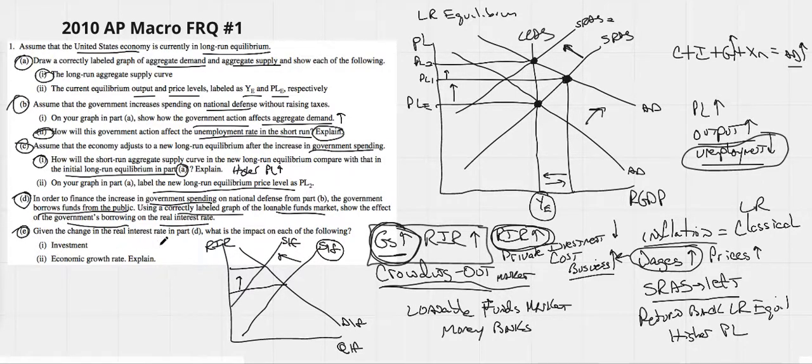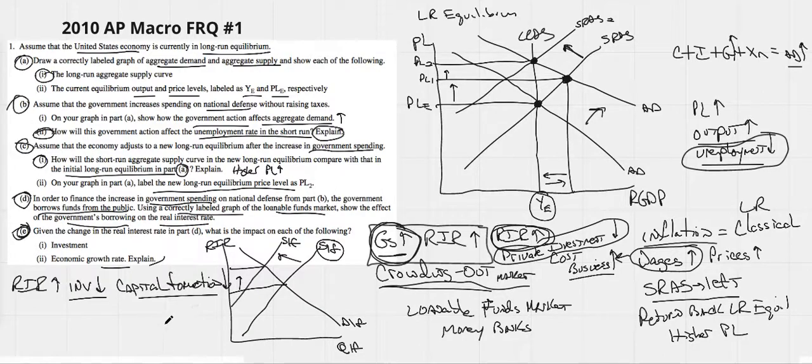E, given the change in real interest rate in Part D, what is the impact on the following? We've already kind of talked about that. As those real interest rates go up, and these are asked quite a bit. There's a ton of them, and we kind of answer them always in the same way. When real interest rates go up, we know that investment is going to go down. If there's less investment, could we assume there's going to be less capital formation? If there's less capital, what we know is that there's going to be less economic growth rate. Remember, one of your six things for your PPC is capital formation. So, if there's less capital goods being produced, we know in the long run our growth rate is going to slow.